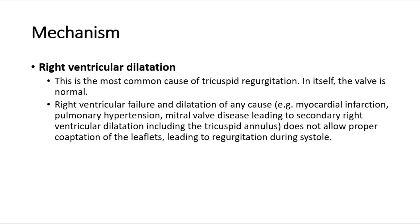Looking at the specific mechanism for its causes: right ventricular dilatation is the most common cause of tricuspid regurgitation. In itself, the valve is normal. Right ventricular failure and dilatation of any cause — such as myocardial infarction, pulmonary hypertension, or mitral valve disease — leads to secondary right ventricular dilatation including the tricuspid annulus, which does not allow proper coaptation of the leaflets, leading to regurgitation during systole.